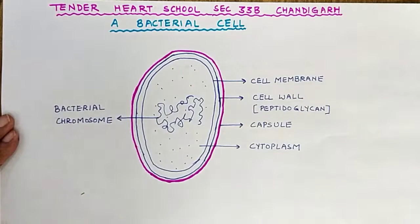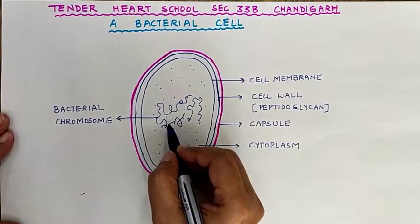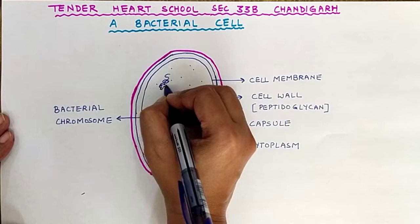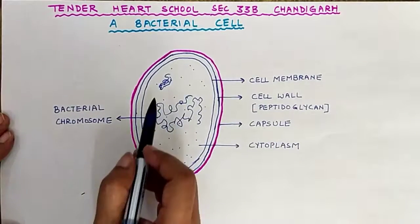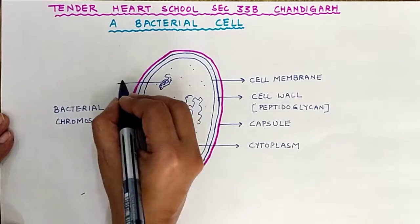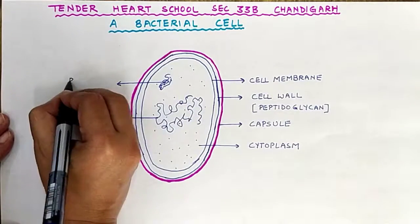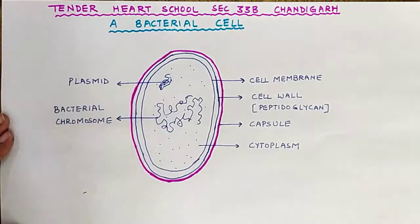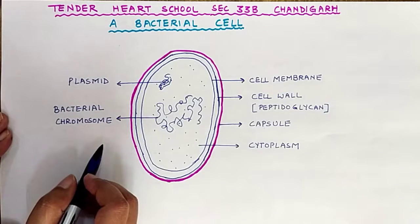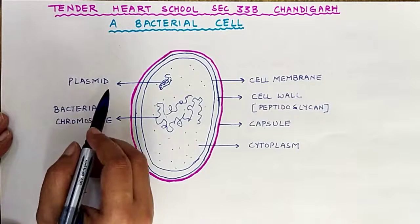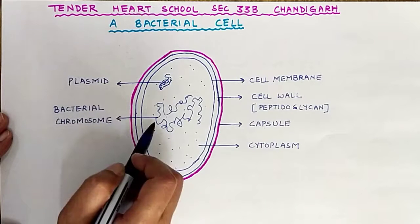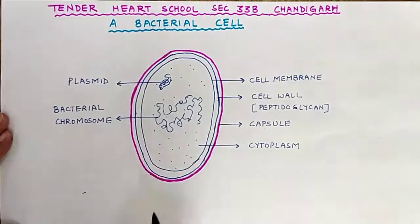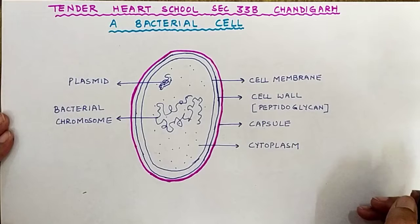This is the bacterial chromosome. In addition to the bacterial chromosome, sometimes a small strand of another chromosome is present in a bacterial cell — this is called the plasmid. A plasmid is a genetic structure in a cell that can replicate itself independently of the chromosome. It is typically a circular DNA strand in the cytoplasm of a bacterial cell.